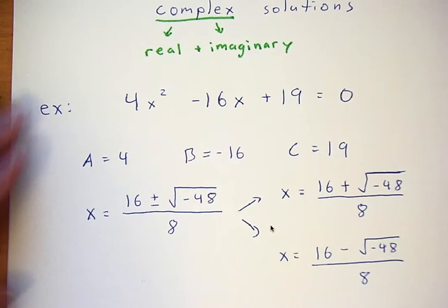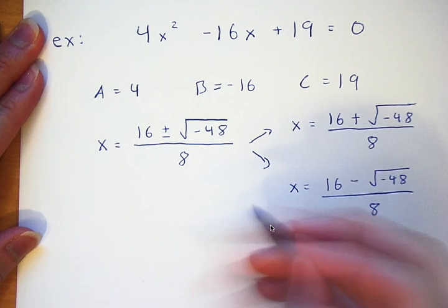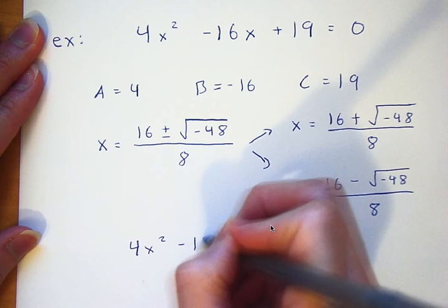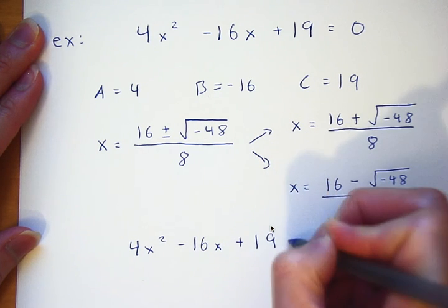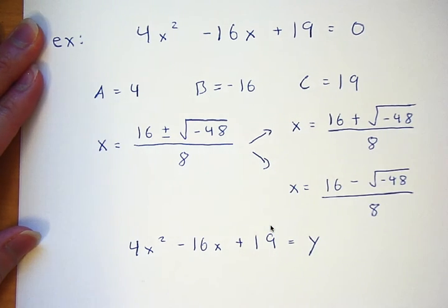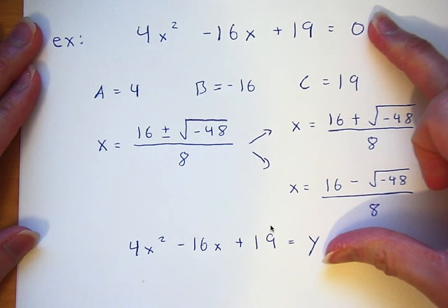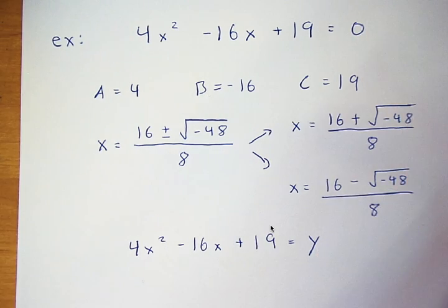If I were to look at the graph — changing zero to y, so y equals 4x squared minus 16x plus 19 — the question is: what do the x-intercepts look like when you have two imaginary solutions? The x-intercept is where y equals zero, so what does it look like with two complex solutions?